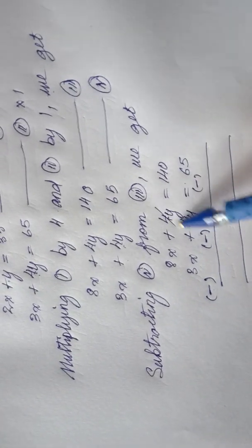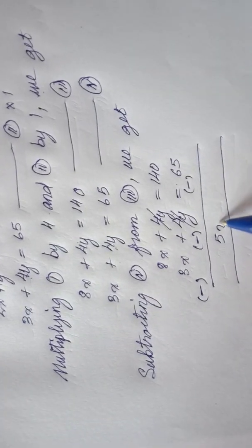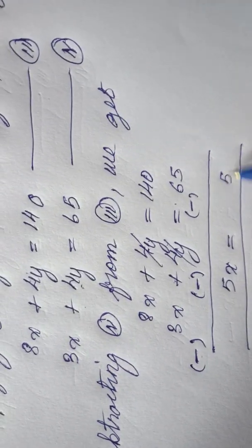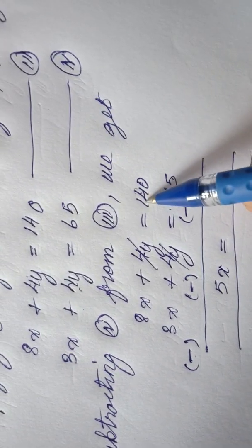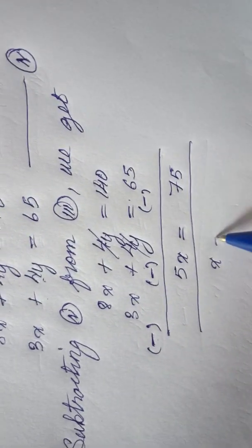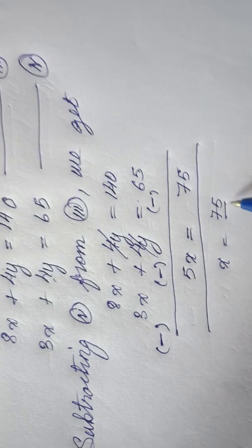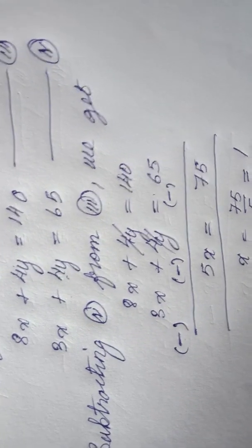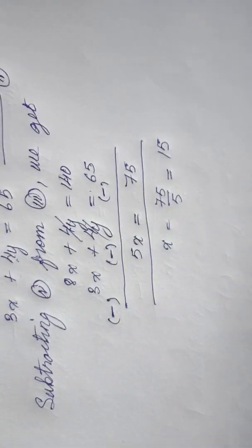4y minus 4y cancel each other. 8x minus 3x is 5x. Then here, 140 minus 65. 10 minus 5 is 5, here we have 13, 13 minus 6 is 7. So 5x is equal to 75. If I do the calculation, x is equal to 75 by 5, which equals 15. So the value of x is 15. I have the value of x, so my next mission is to find the value of y.